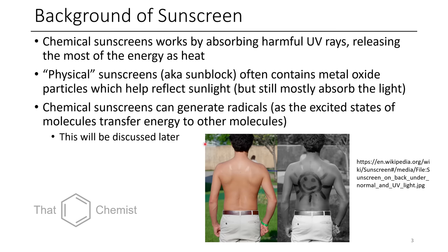One thing to note about chemical sunscreens is that they can generate radicals, because the excited states of these molecules can transfer energy to other molecules. These molecules could be like oxygen, for instance, making reactive oxygen species — ROS. And when those are generated, something has to be present to scrub them up, and we're going to be talking about those a little bit later.